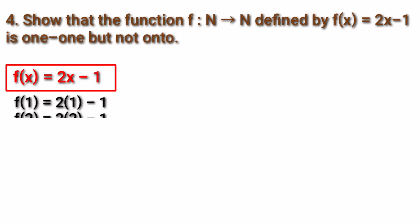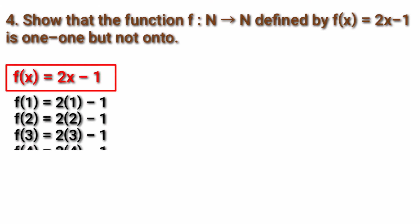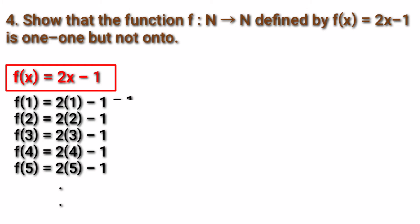f(1) = 2×1 − 1 = 1, f(2) = 2×2 − 1 = 3, f(3) = 2×3 − 1 = 5, f(4) = 2×4 − 1 = 7, f(5) = 2×5 − 1 = 9.